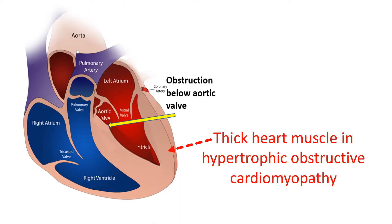When surgery for another condition with thickening of heart muscle known as hypertrophic cardiomyopathy is done, associated myocardial bridges are cut even in children. This gives relief of symptoms which were not responding to medications. In a study of 823 adults who underwent surgery for hypertrophic obstructive cardiomyopathy,